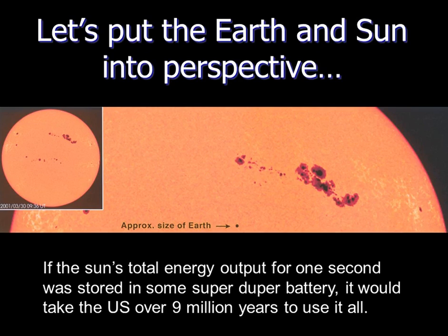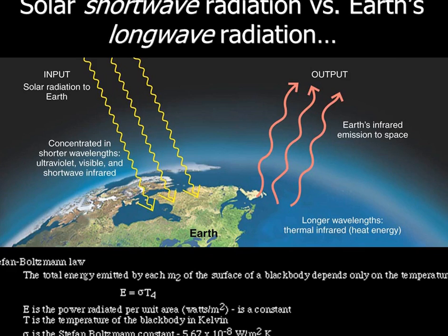Let's put the Earth and sun in a little bit of perspective. If the sun's total energy output for one second was stored in some super-duper battery, it would take the U.S. over nine million years to use it all. The Earth is this tiny little thing, 93 million miles away from this giant output of massive fusion energy. The sun generates a lot of energy, and only a fraction of it hits our planet.